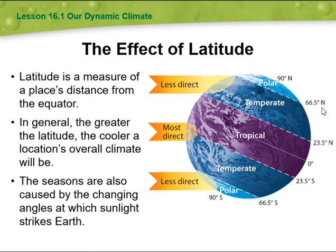Then 66.5 degrees north — the temperate zone — and 90 degrees north, the polar region. Moving downward, we also have 23.5 degrees south in the temperate zone, and then 66.5 and 90 degrees south, also polar.